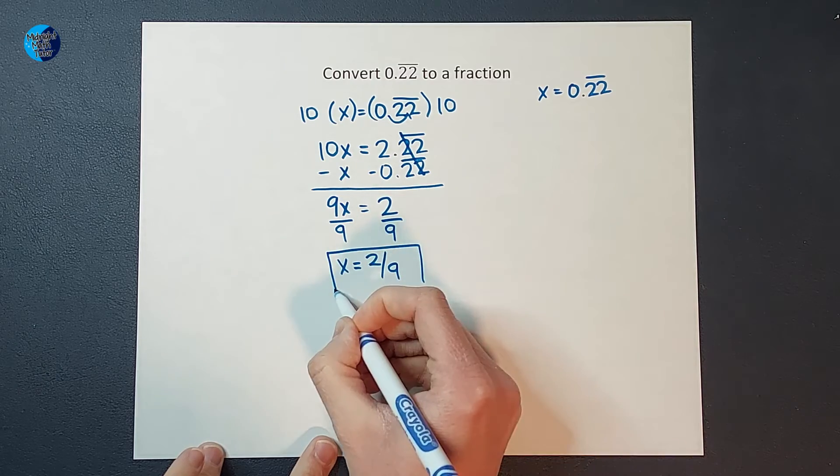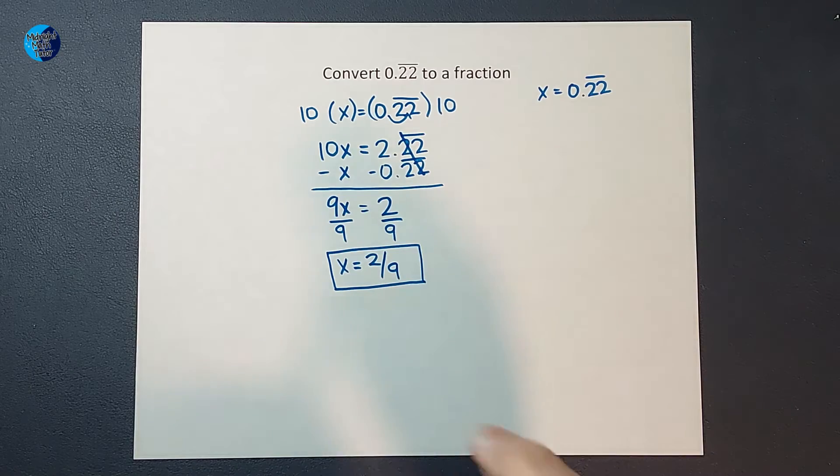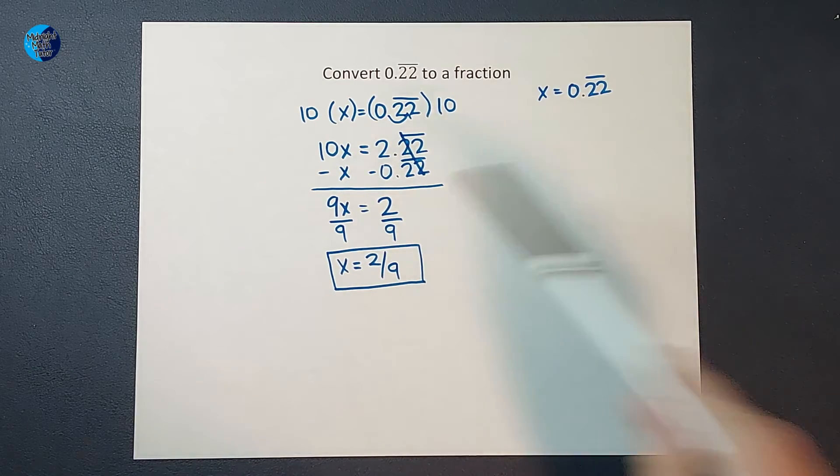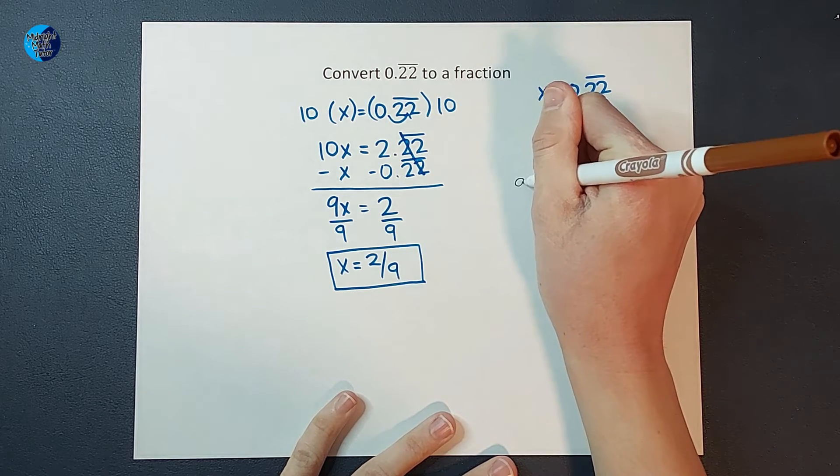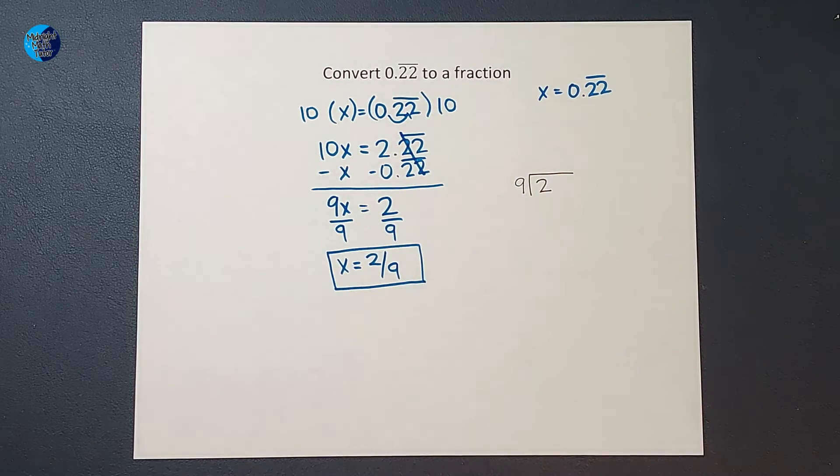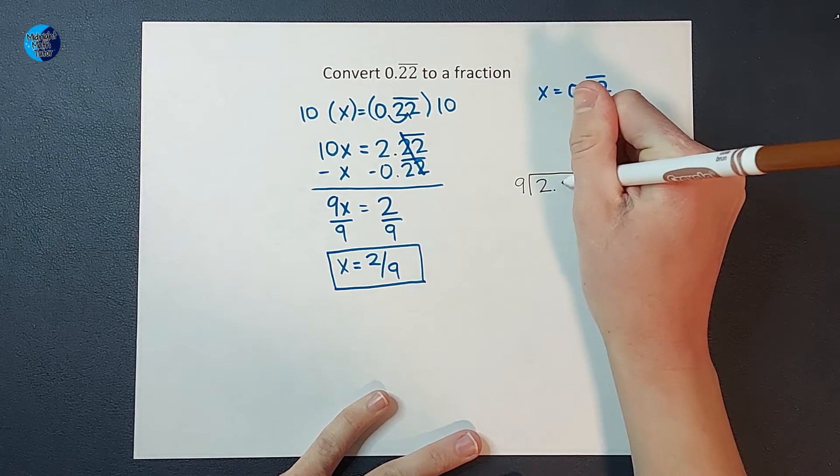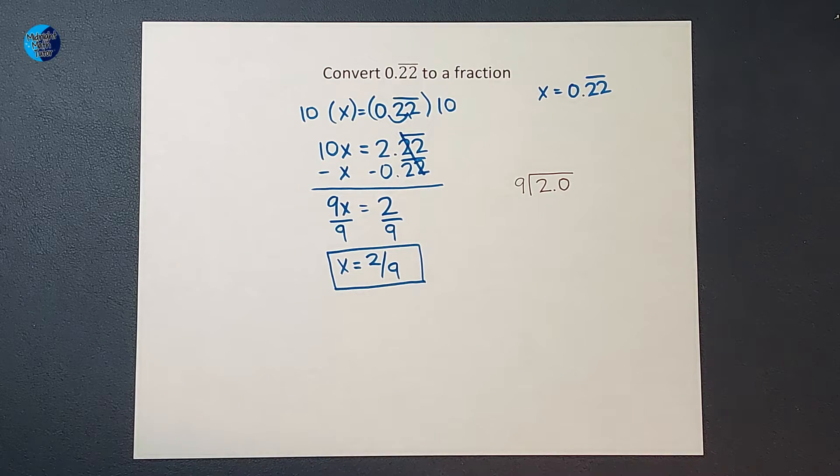Now, you could plug this into your calculator, make sure that you get 0.2 repeating when you plug in 2 ninths. Another way to look at this is to try to divide it. So let's see what that looks like. If I wanted to divide this 2 over 9, that's like saying how many times does 9 go into 2, right? Which we know is going to be a fraction. So in order to kind of make this work, you've probably done this before, we make it 2.0, right? And if you need a review on long division with decimals, I'll link a video in the corner for you.